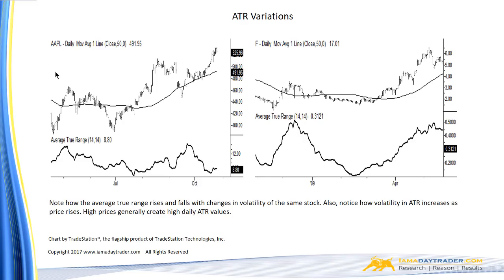Same thing for Apple — a much higher price at that particular time — and the ATR was actually as high as $8.80. On an average day at that time, Apple was moving $8.80, rising when there were larger ranges and moving down when ranges were smaller. As you can tell, ATR goes up and down with changes in volatility all the time.